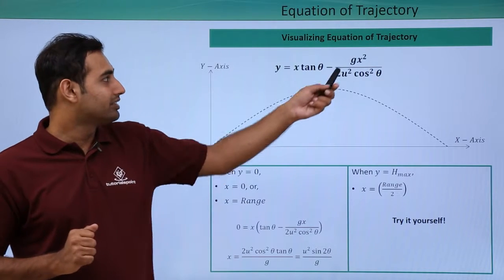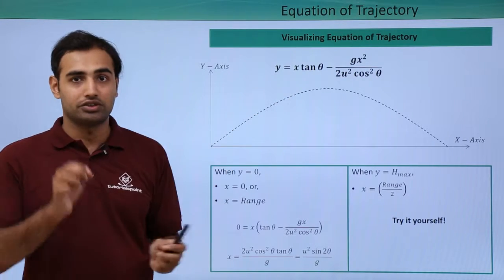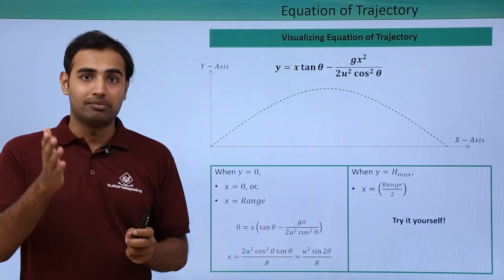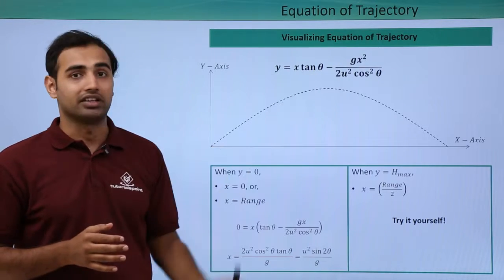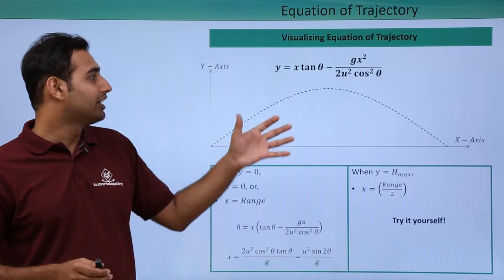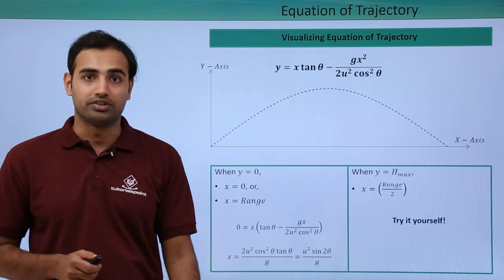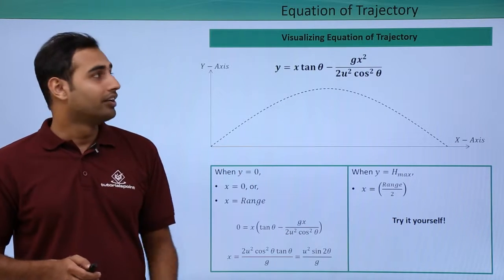The first thing is that the coefficient of x square, which is also known as a in mathematics, has a negative sign. So a is negative. So when a is negative, we clearly have a parabola facing downwards. Parabola is facing downwards.